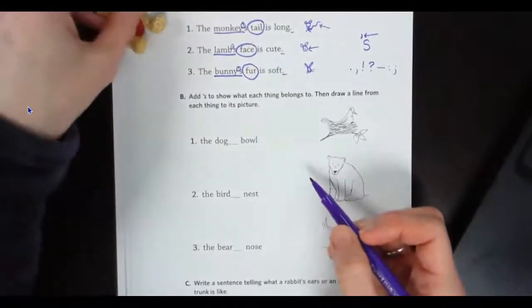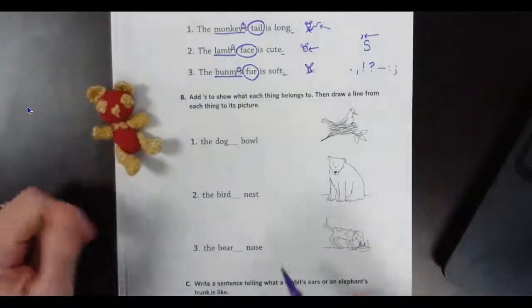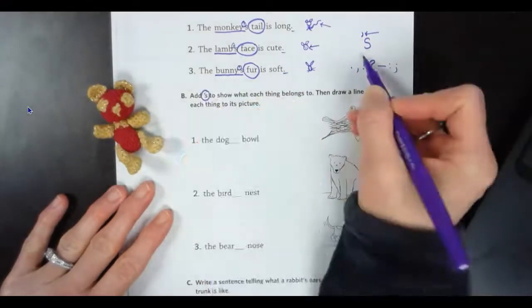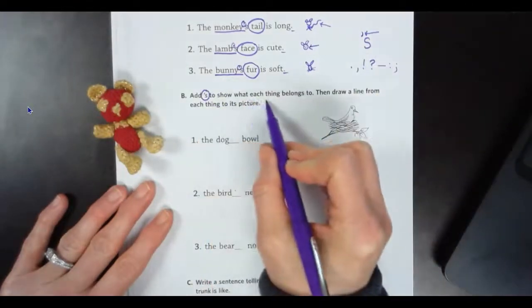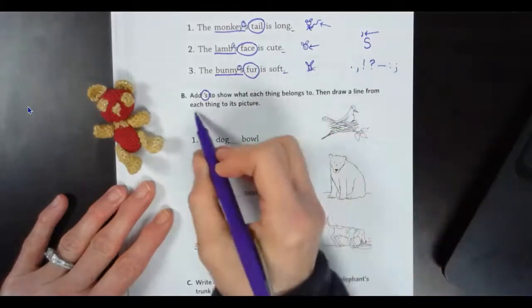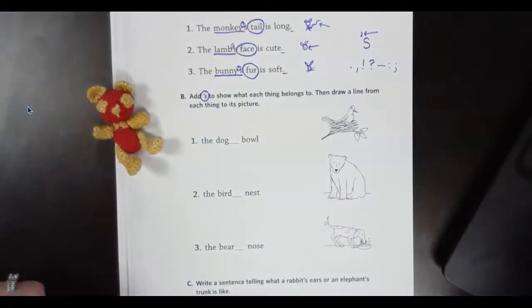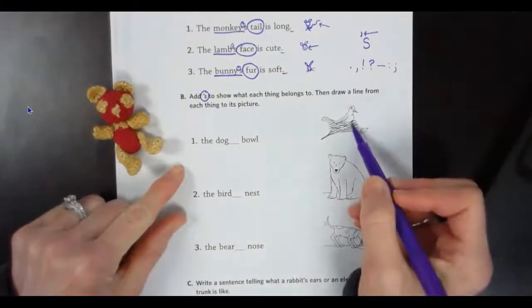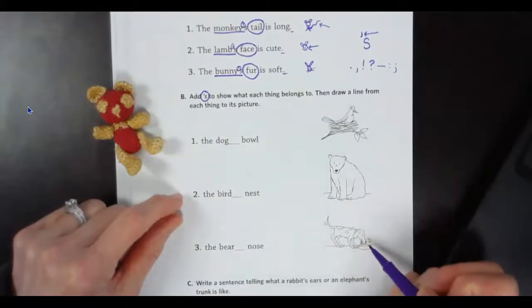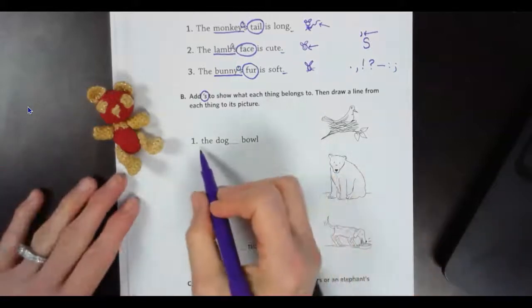All right. In this part down here, and this is when we're going to use Sparkles. Hello, Sparkles with the big eyes. All right. Add apostrophe S's. Okay. So that's what I just drew up here, an apostrophe S to show what each thing belongs to. Then draw a line from each thing to its picture. Okay. All right. So we've got a bird in a nest, a bear just kicking it, and we've got a dog drinking water. All right. Let's read what these things say.